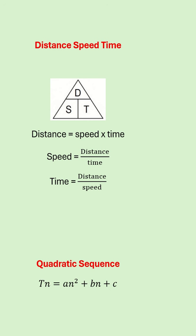In patterns and sequences a quadratic sequence, the nth term is found and it must be in the form an squared plus bn plus c.